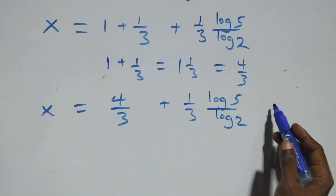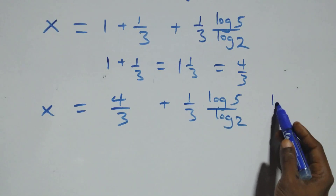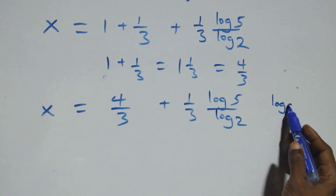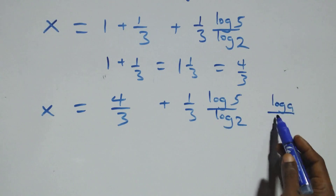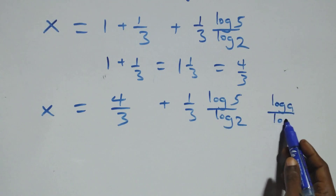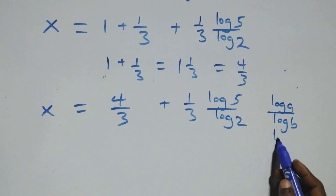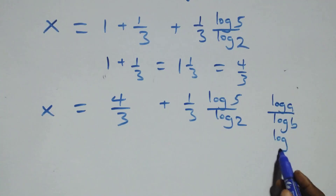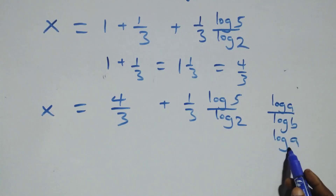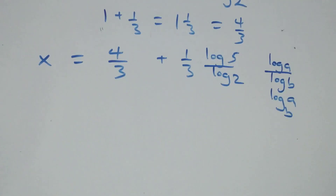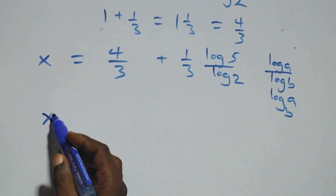We apply the change of base formula: log_a(x) equals log b(x) over log b(a). Applying this here, log 5 over log 2 becomes log base 2 of 5.